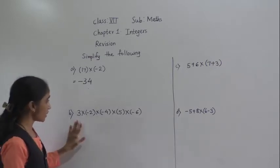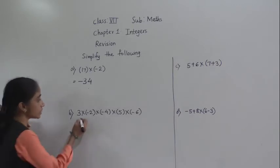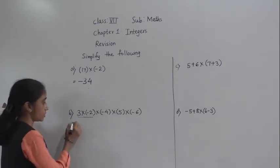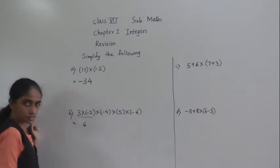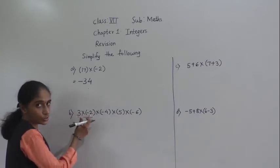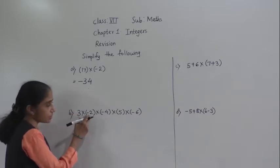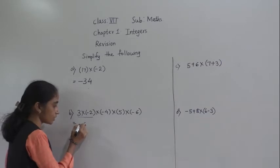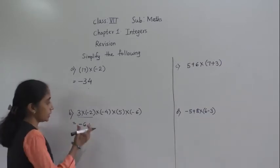So now let's solve the next example. In this example we will do the multiplication of both the numbers first. See now, 3 into 2 — 3 twos are 6. I have done the multiplication of both the numbers. This number is positive and this number is negative, so their product will be negative. One number is positive, another number is negative, so their product will be negative.